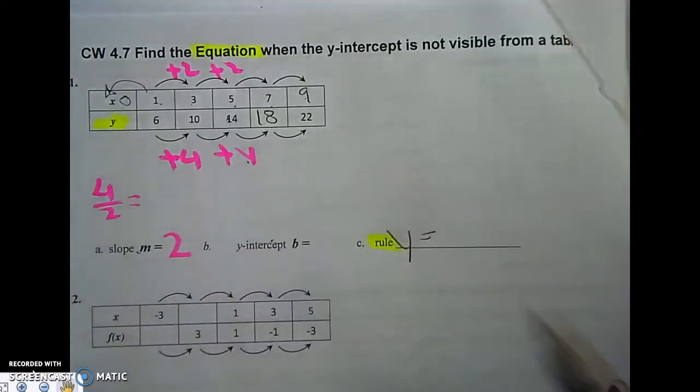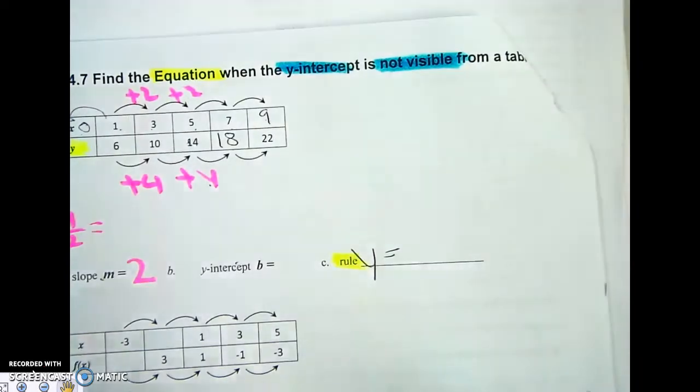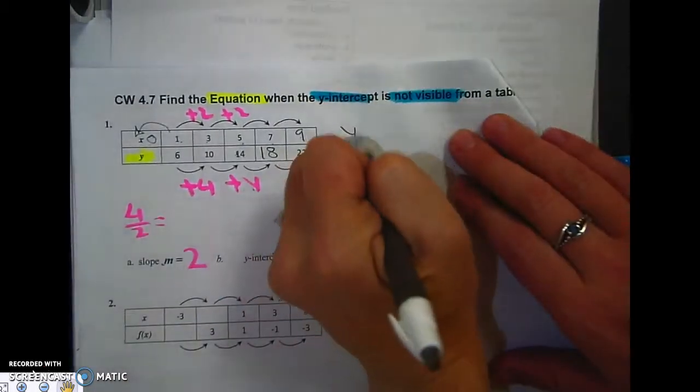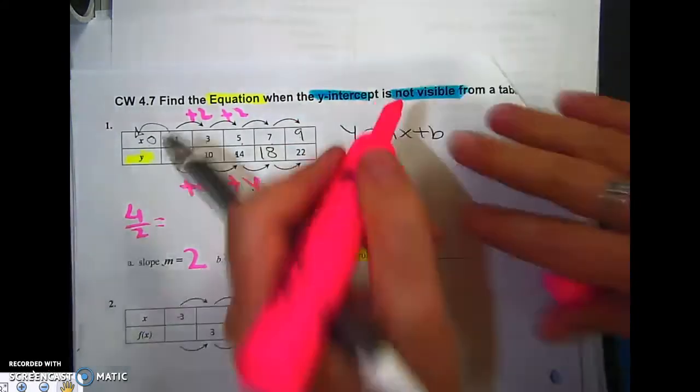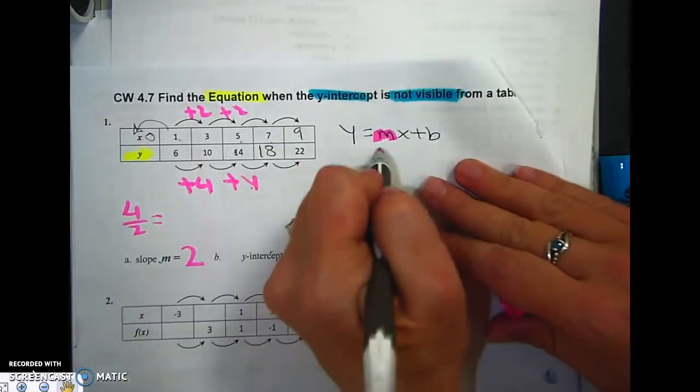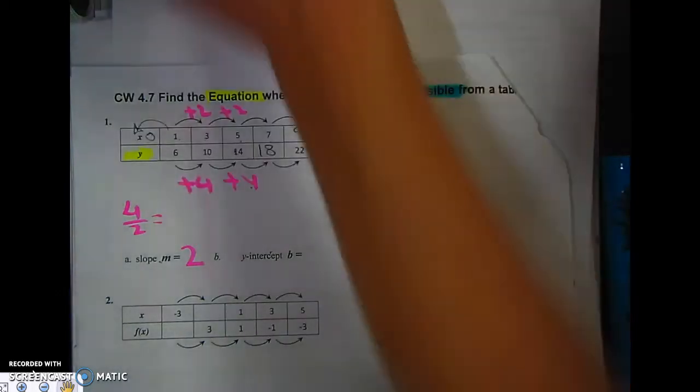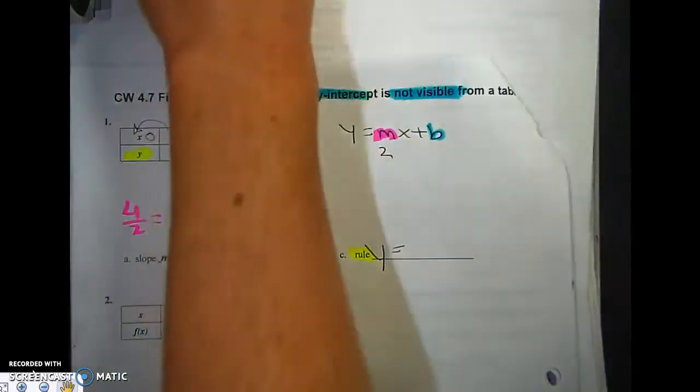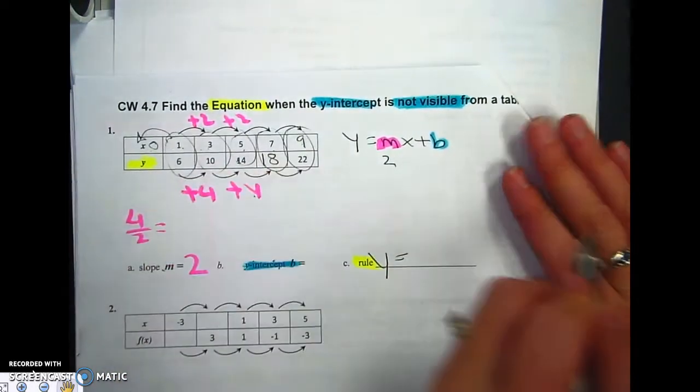So if the y-intercept is not visible from the table, here's what you're going to do. You're going to use what you know, which is y equals mx plus b. The m is your slope, which is right there. I'm going to put a 2 right there. My b is what I'm trying to figure out. I don't know what it is yet. So I'm going to use one of these points to figure it out.